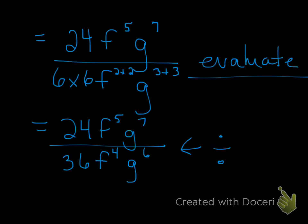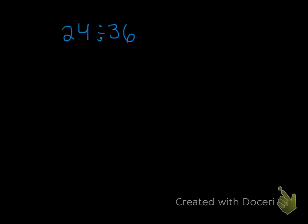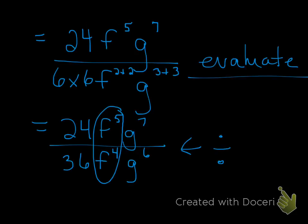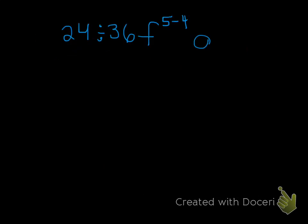Then I'm going to evaluate for my f's: f to the power of 5 divided by f to the power of 4. You keep the same base, but this time you subtract the exponents. You do the same thing for the g's — g to the power of 7 divided by g to the power of 6. We keep the same base and we subtract the exponents.